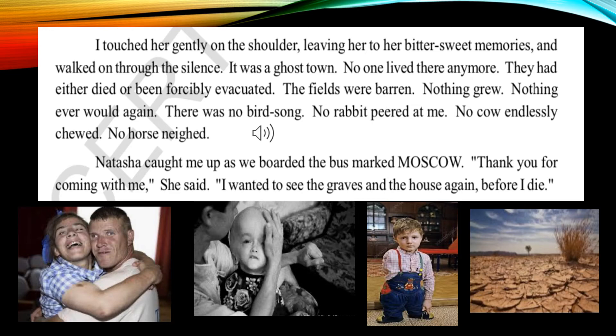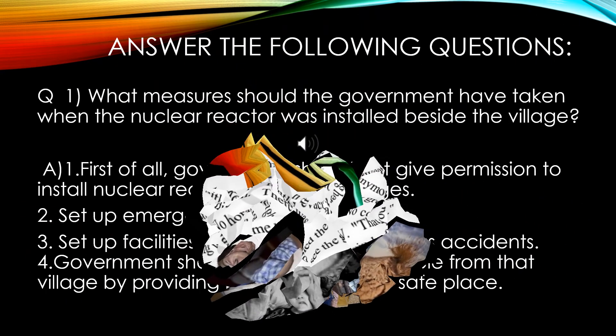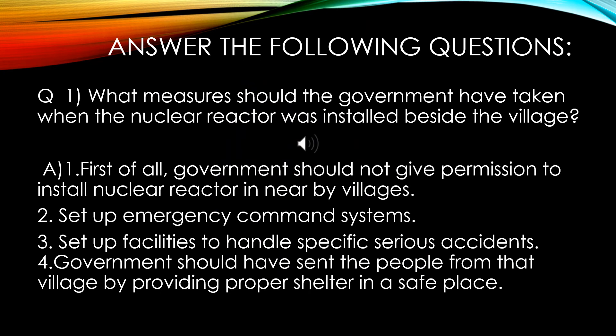Children, now we will learn answers for the following questions. First question: What measures should the government have taken when the nuclear reactor was installed beside the village? First, the government should not give permission to install a nuclear reactor in nearby villages. Second, set up emergency command systems. Third, set up facilities to handle specific serious accidents.